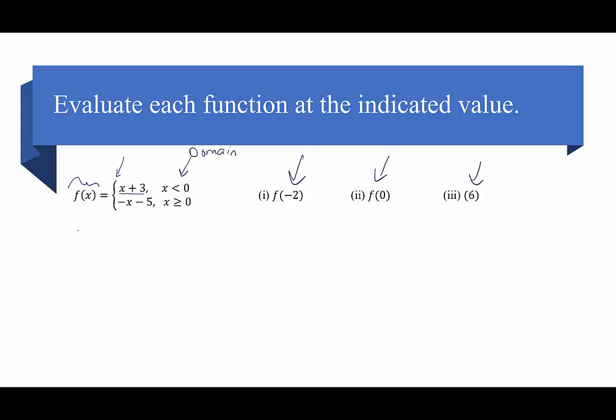In these examples, we're going to evaluate each function at the indicated value. We have f of x equals x plus 3 when x is less than 0, and f of x equals negative x minus 5 when x is greater than or equal to 0. Some students like to plug into both pieces — don't do that. You plug into the piece in which that value falls into the domain.